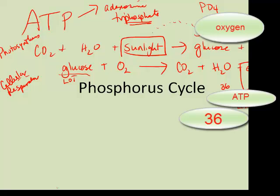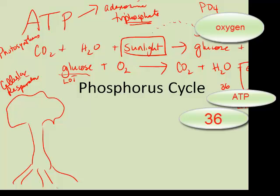The role of phosphorus in plants is that it promotes root growth, stem strength, and seed production. So it's no mistake that we actually include phosphate when we make fertilizers for plants — that's one of the main components. In humans, phosphate is important for strong bones. Our bones are made up of calcium, but the calcium is actually bonded to phosphate, so our bones are actually made of calcium phosphate.